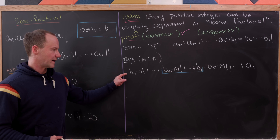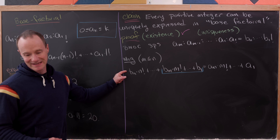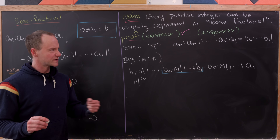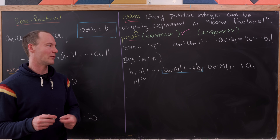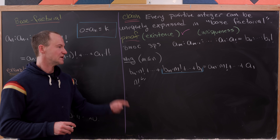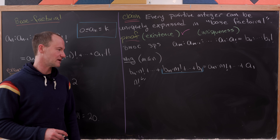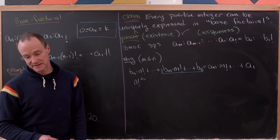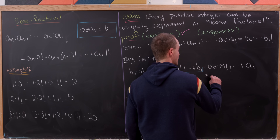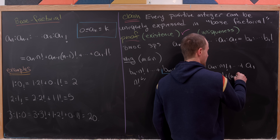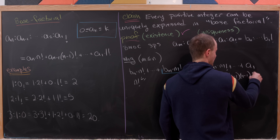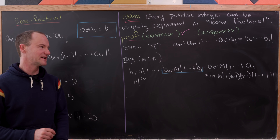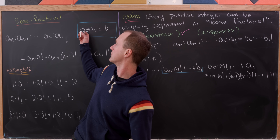Let's observe that the left-hand side is going to be bigger than or equal to n! — because b_n is at least 1, assuming no trailing zeros. And the right-hand side is less than or equal to m times m! plus (m−1) times (m−1)! all the way down to 1 times 1!, replacing each a with its largest possible value given the constraint.